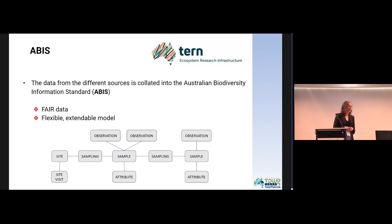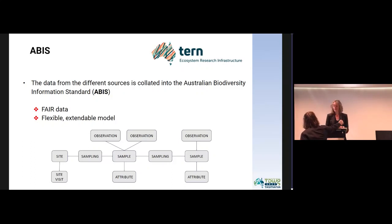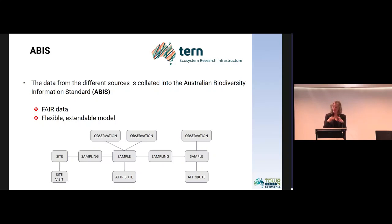It uses the underlying data model of ABIS, which is the Australian Biodiversity Information Standard — a FAIR data standard with a flexible and extendable model that focuses on activity-style data. There are major classes that include site and site visits, sampling and producing samples, where you can make observations and samples can have various attributes. You can use these major classes defined within themselves and have multiple of those within the data model you're representing.